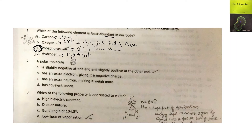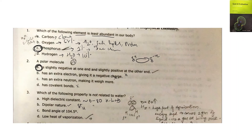The next question asks to describe a polar molecule. A polar molecule is slightly negative at one end and slightly positive at the other — this is correct, as we have a partial positive charge at one end and partial negative at the other. The other options — extra electron giving negative charge, extra neutron, or just having covalent bonds — are incorrect. Then: which property is not related to water? Water has a high dielectric constant of approximately 80, is dipolar in nature with partial charges, and is angular in shape with a bond angle of 104.5°.